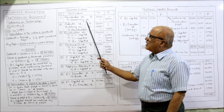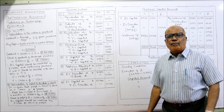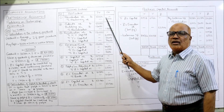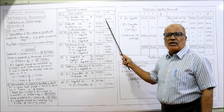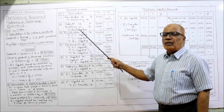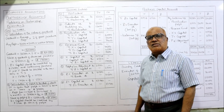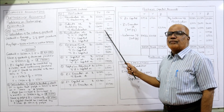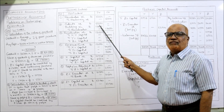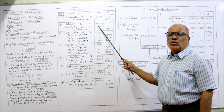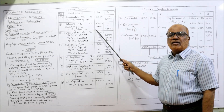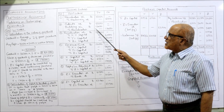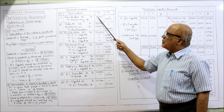Now the journal entries. First, regarding revaluation of machinery — value is reduced. Entry: Revaluation Account Dr., Machinery Account Cr. 5,000. For patents and building — value is appreciated. Entry: Patent Account Dr. 5,000, Building Account Dr. 12,000, to Revaluation Account 17,000. Being the value of patents and building appreciated.